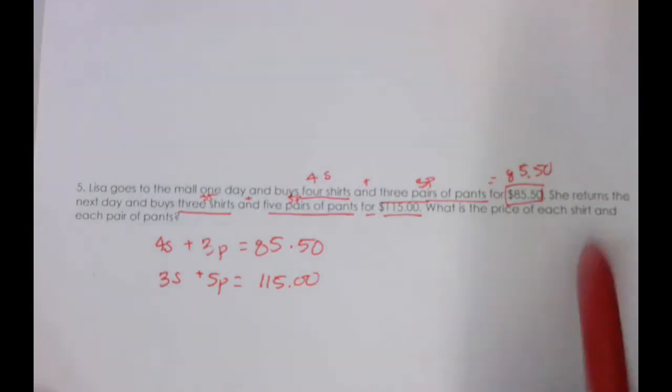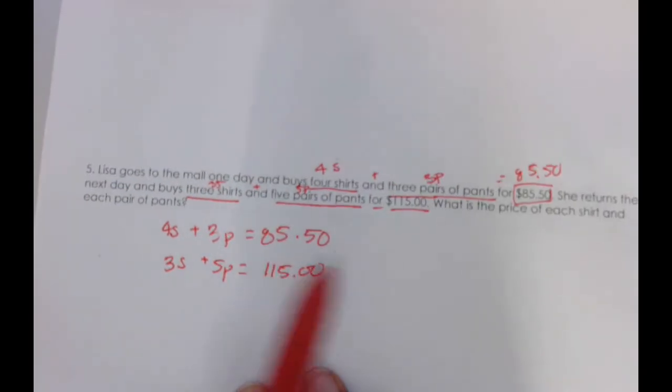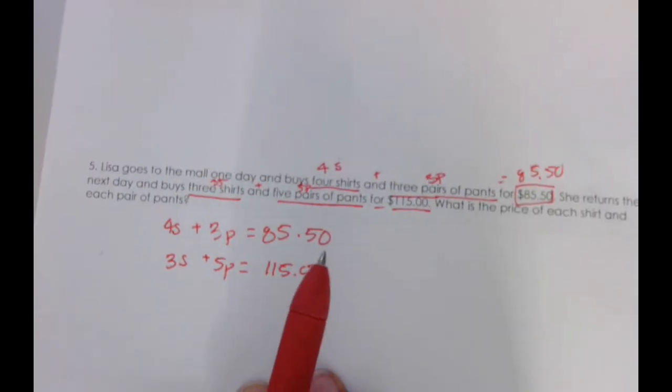Then I have 3s plus 5p is going to equal 115. This is my system. Just annotating this problem alone gave me my system. Again, I'm not going to tell you the answers for that. I'm just going to help you set up the equation.